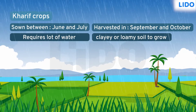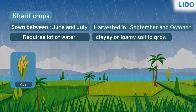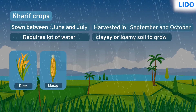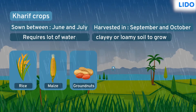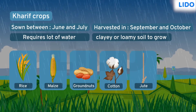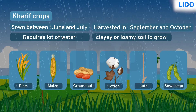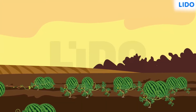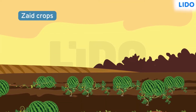These crops also need clay or loamy soil to grow well. Some examples of Kharif crops are rice or paddy, maize, groundnuts, cotton, jute and soya bean among others. Between the Rabi and Kharif crop seasons is the Zaid crop season.